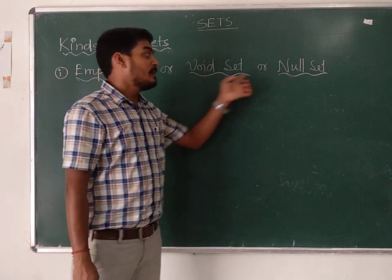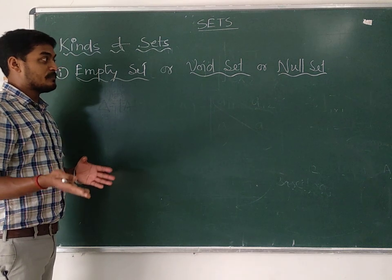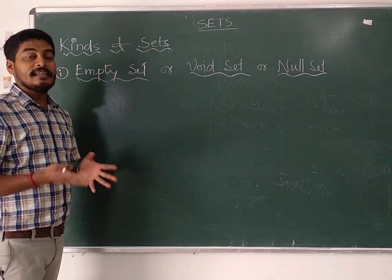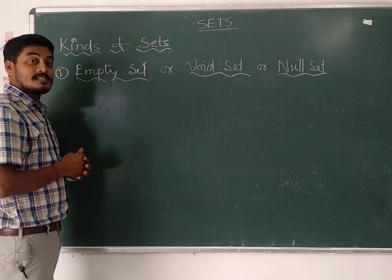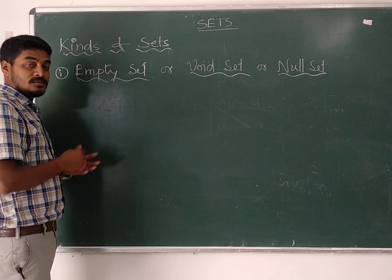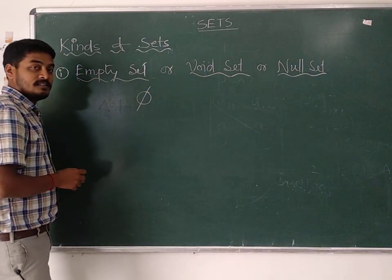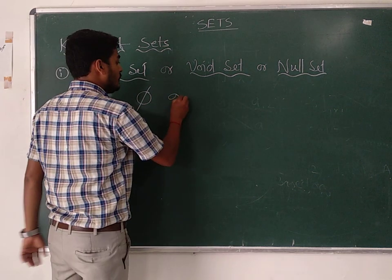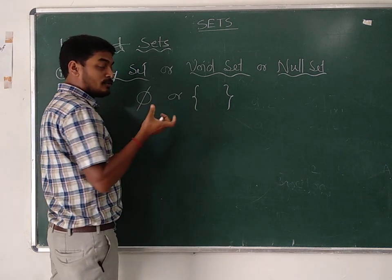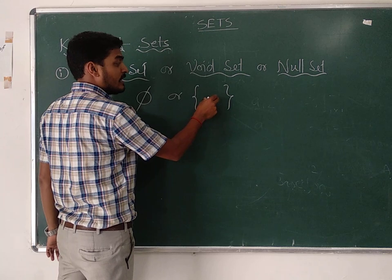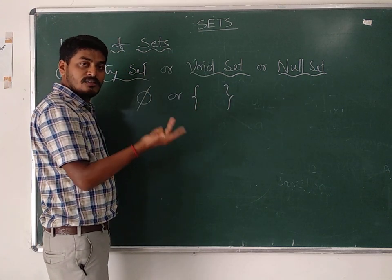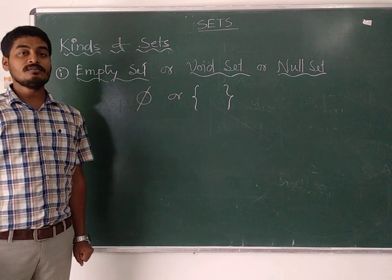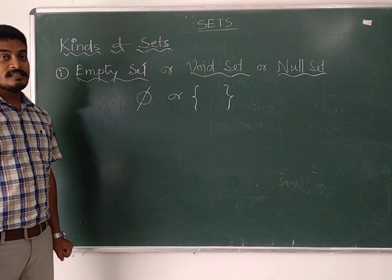The empty set is also known as void set or null set. Each and every set is represented by a specific letter — you can use any letter from A to Z. The specific symbol used to represent an empty set is phi (φ). You can also write it as a simple curly bracket with no elements inside: { }.